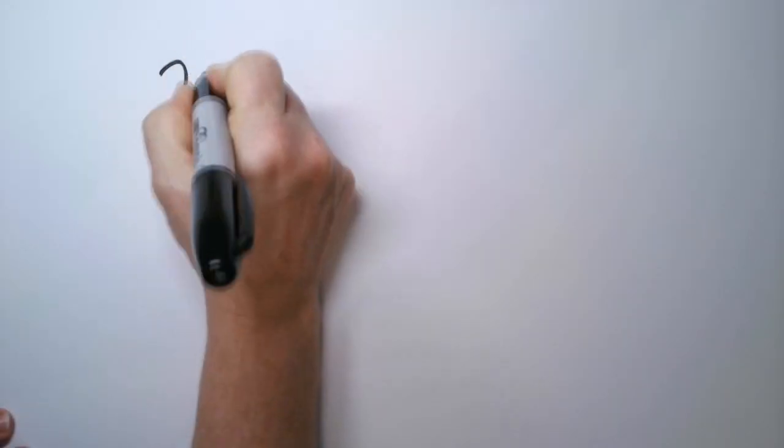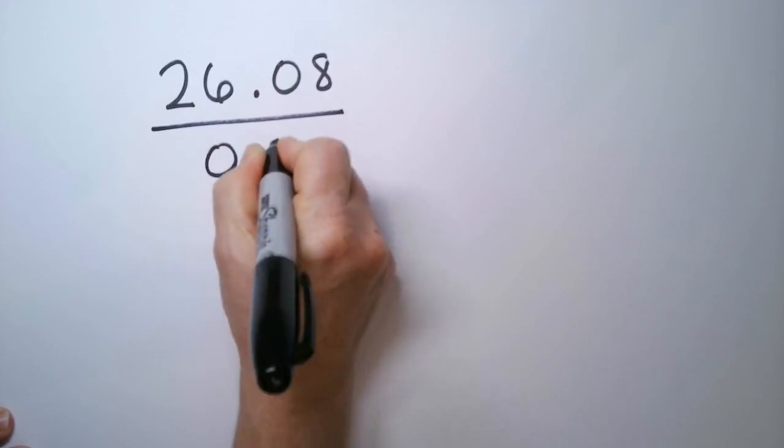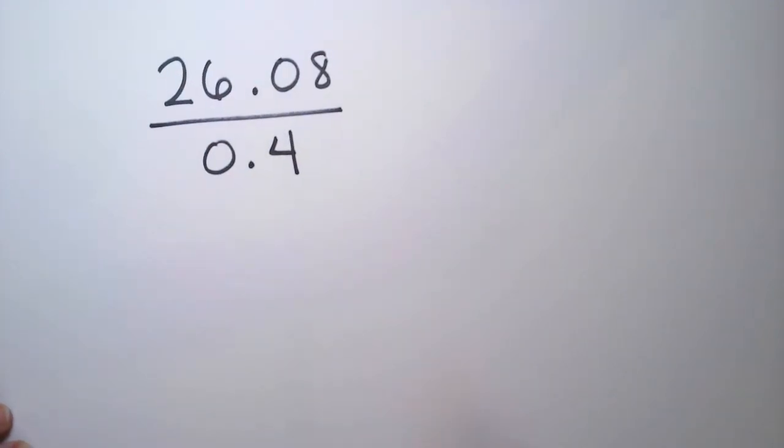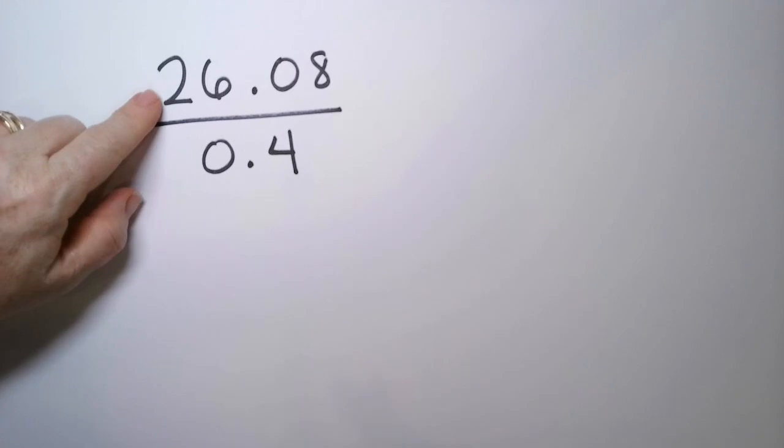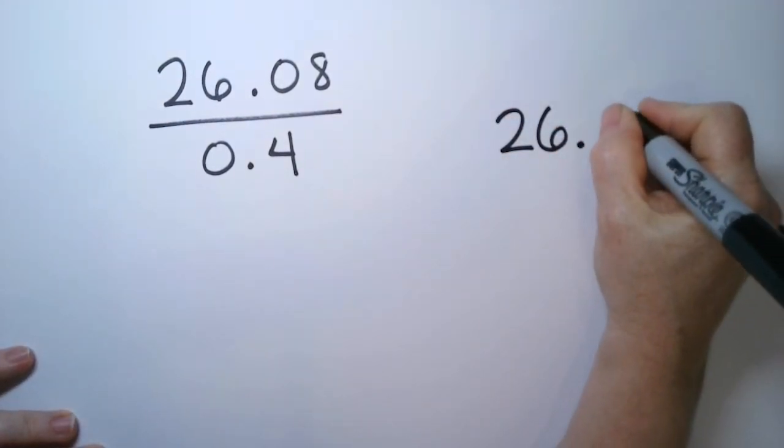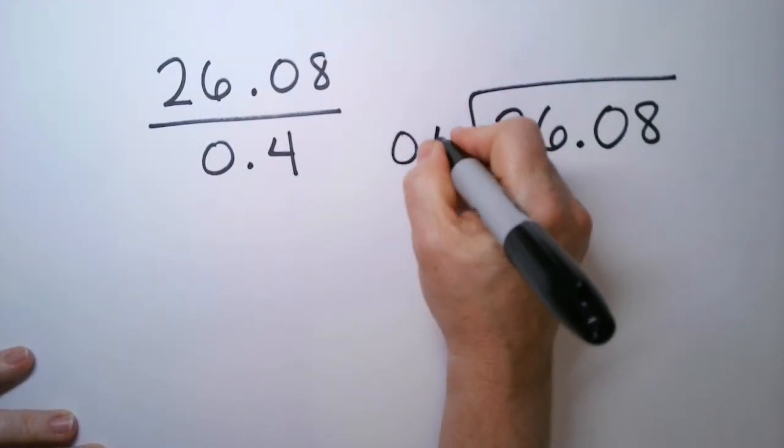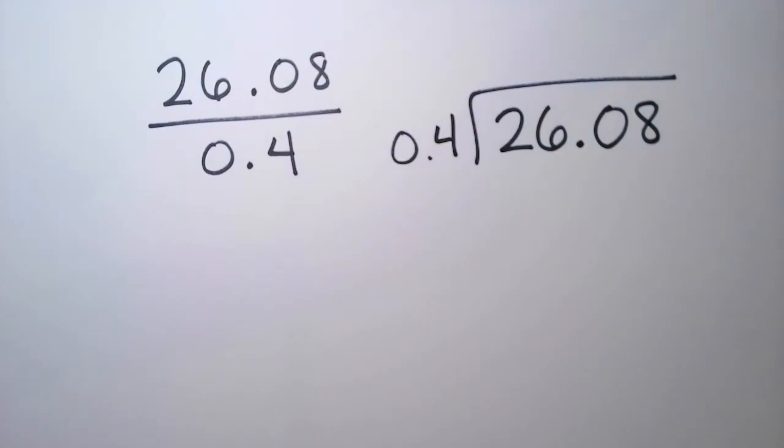Let's try another one. 26.08 divided by 0.4. Let's set up the problem. The numerator is the one that goes inside. This is the one we're splitting into parts. And we're going to divide it by the denominator, 0.4, our divisor.